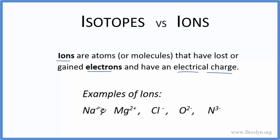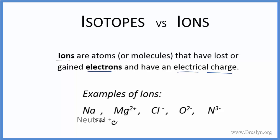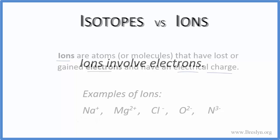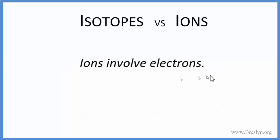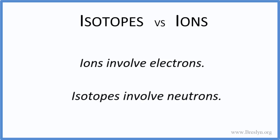If there's nothing written as the superscript — no plus or minus, just the Na, for example — that's considered a neutral atom where the number of protons and electrons are equal, and it doesn't have a charge. The big thing to remember: ions involve electrons, isotopes involve neutrons.